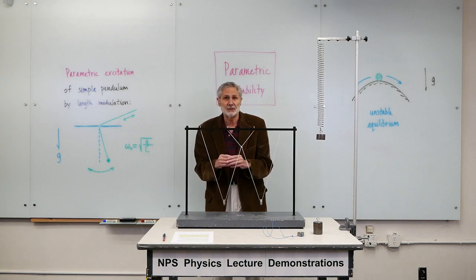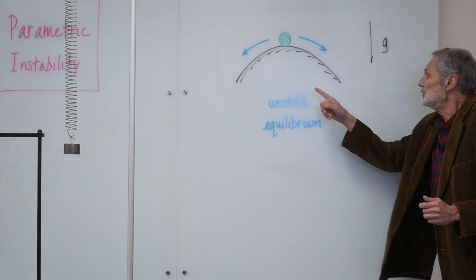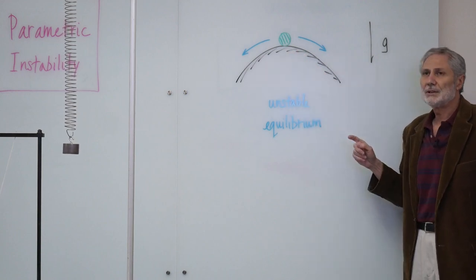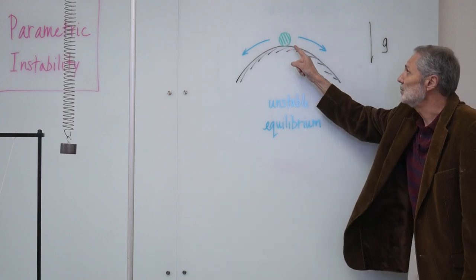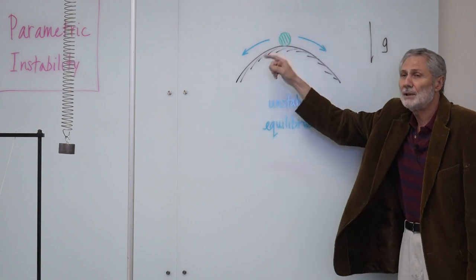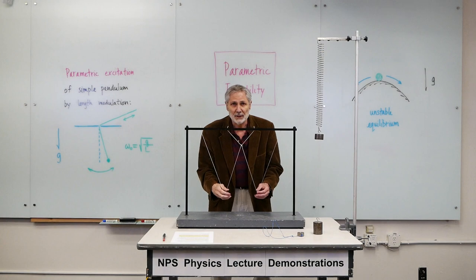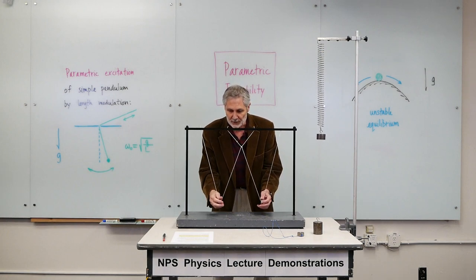And the situation is analogous to this unstable equilibrium of a ball on a two-dimensional hill. The ball is in equilibrium here, but it's not stable. Due to fluctuations, it can go run down the hill one way or the other way. And that's analogously happening here, where the energy can get soaked up by one pendulum or another pendulum.